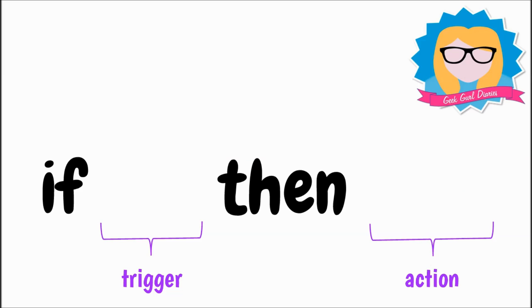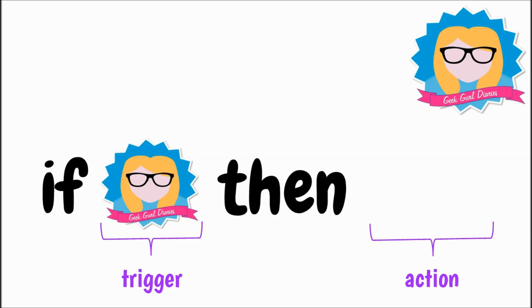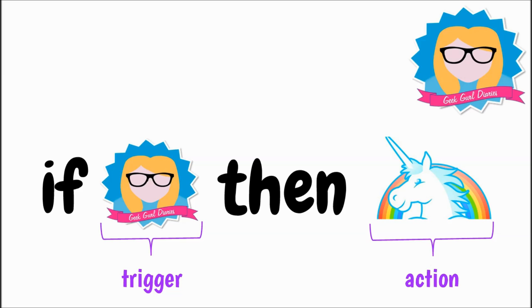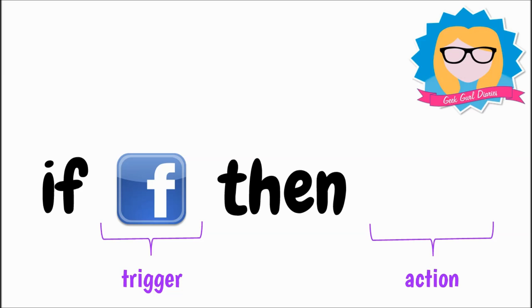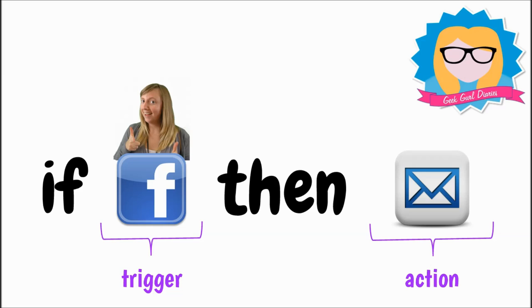Or another way of thinking about it: if Geek Girl Diaries are involved then usually there'll be rainbows and unicorns. Okay, that's not a proper if statement — let's try again. If on my Facebook page somebody uploads an epic photo of me, then I want to receive an email telling me that someone's tagged me in that photo. So if on Facebook someone tags me, then I receive an email — that would be the action.